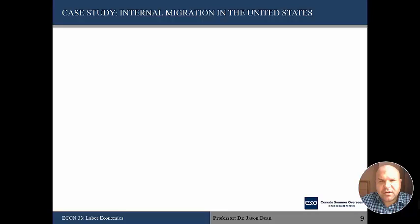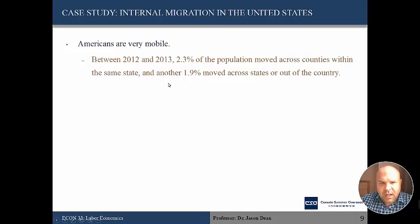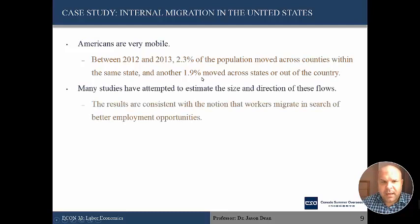In this lecture we're going to look at the United States, which has been studied the most on this topic. In the U.S., workers are quite mobile. Between 2012 and 2013, 2.3% of the population moved across counties within the same state, and another 1.9% moved across states or out of the country. With roughly 360 million people, that's quite a lot. Many studies have attempted to estimate the size and direction of these flows, and the results are consistent with workers migrating in search of better employment opportunity — primarily for economic reasons.